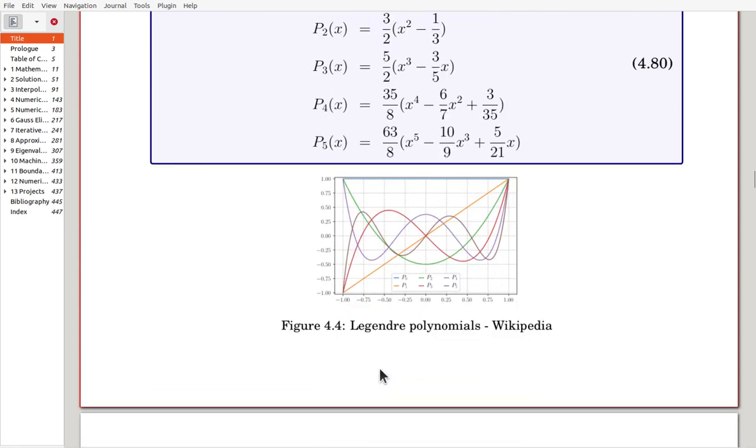Here is a figure. P0 is 1, P1, P2, P3, P4 is purple, and P5 is that one. These are the plots of the Legendre Polynomials. I got this one from Wikipedia.